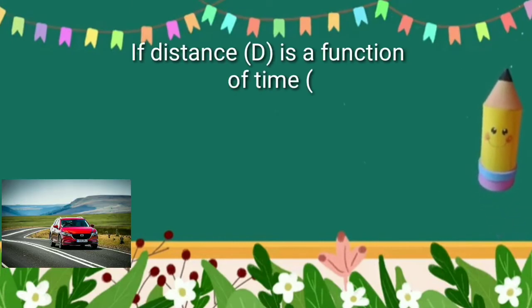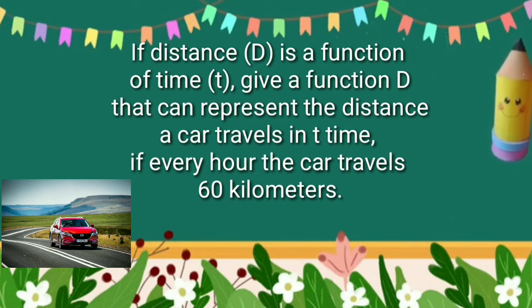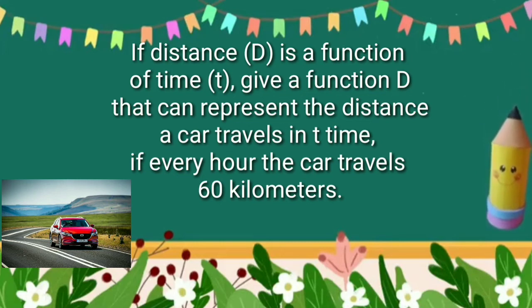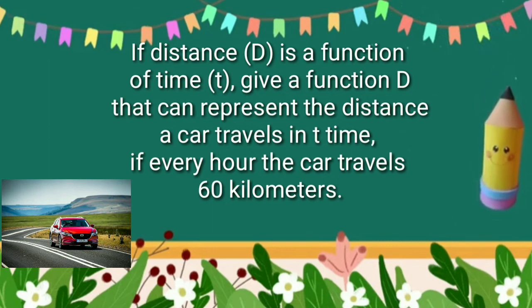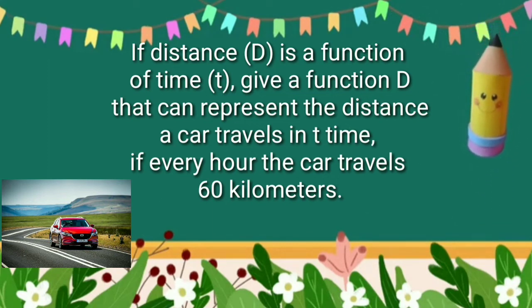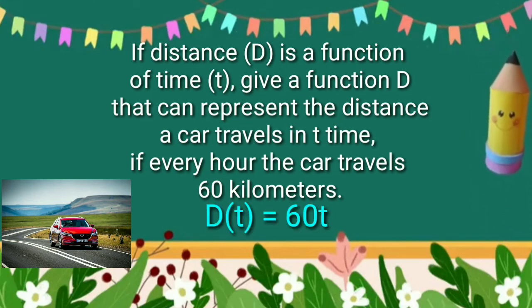Letter b. If distance d is a function of time t, give a function d that can represent the distance a car travels in t time, if every hour the car travels 60 kilometers. Solution: since every hour the car travels 60 kilometers, therefore the distance function is given by d of t is equal to 60 multiplied by t.